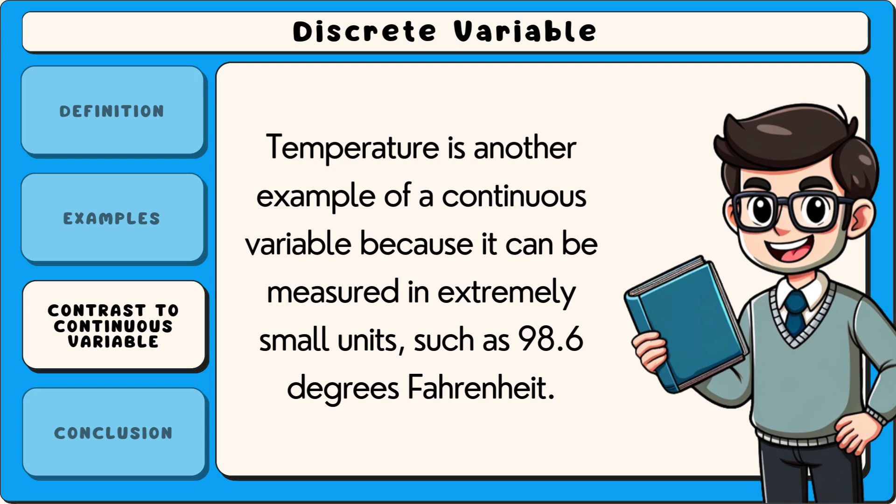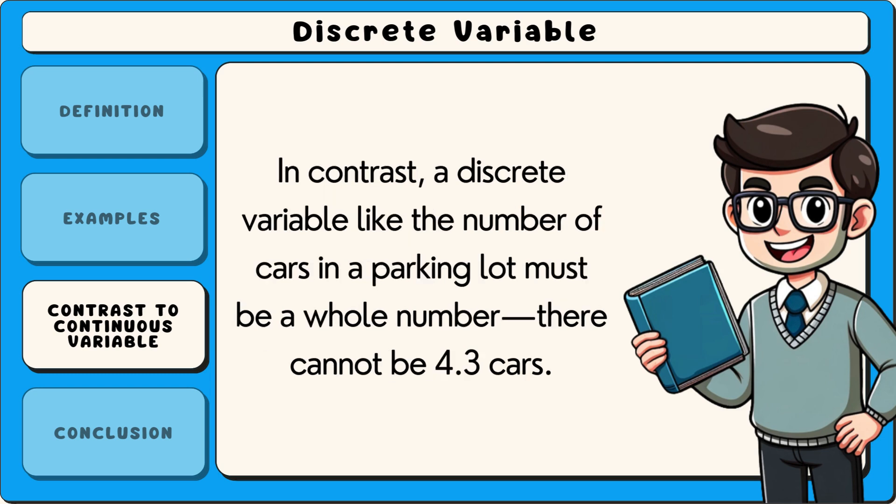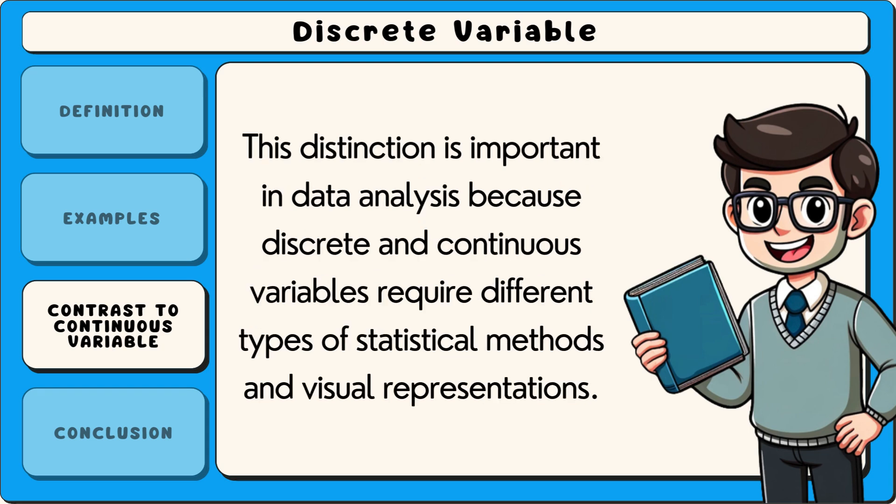Temperature is another example of a continuous variable, because it can be measured in extremely small units, such as 98.6 degrees Fahrenheit. In contrast, a discrete variable, like the number of cars in a parking lot, must be a whole number — there cannot be 4.3 cars. This distinction is important in data analysis, because discrete and continuous variables require different types of statistical methods and visual representations.